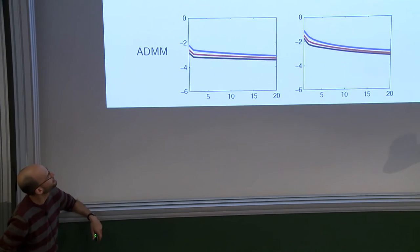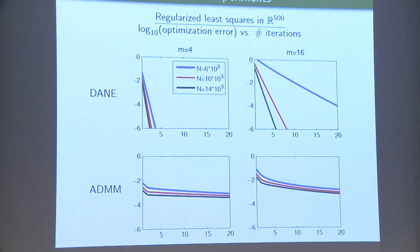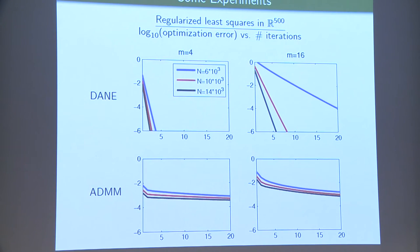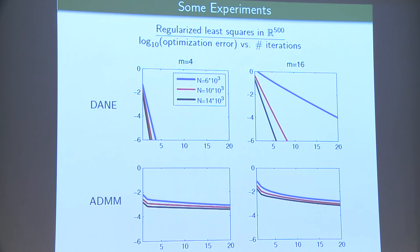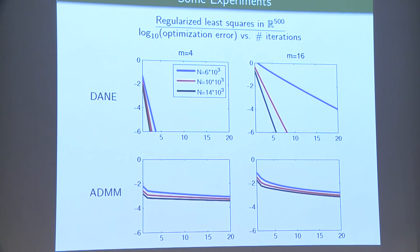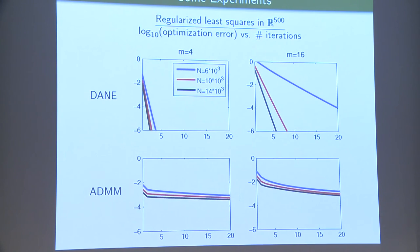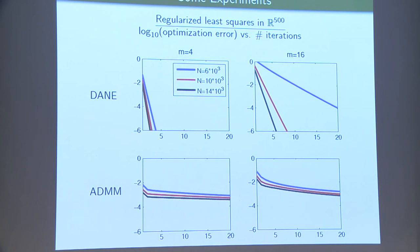An illustration comparing DANE to ADMM on synthetic data: the left column shows four machines, the right shows sixteen machines, and different lines correspond to different amounts of randomly partitioned data. DANE clearly benefits as each machine gets more data — the relatedness of local functions becomes stronger, delta shrinks, and the number of communication rounds needed decreases. In contrast, ADMM doesn't utilize relatedness between local functions, so even as each machine gets more data, its convergence rate remains the same.